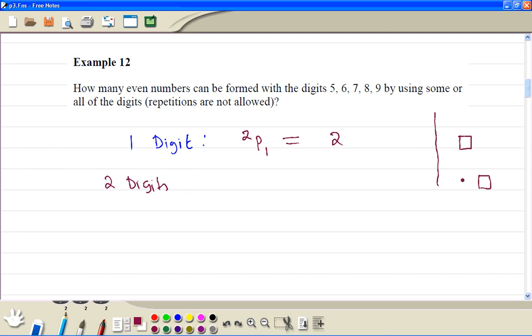If we choose 2 digits, then we have 2 positions to fill in. We have 2 choices for this one, so that's 2p1. Then here, to fill this place, we have 4 letters available. So we have 4, then we are choosing 1. So that's 4 times 2, that will give us 8 different numbers.